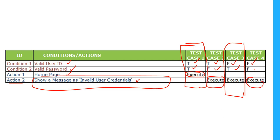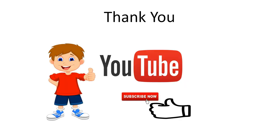With these scenarios we can create four different test cases with different combinations of conditions and actions. This is all about decision table testing technique. Thanks for watching this video — please subscribe to my channel to get more updates. Thank you.